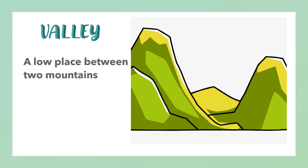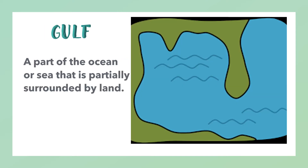Valley: a low place between two mountains. Gulf: a part of the ocean or sea that is partially surrounded by land.